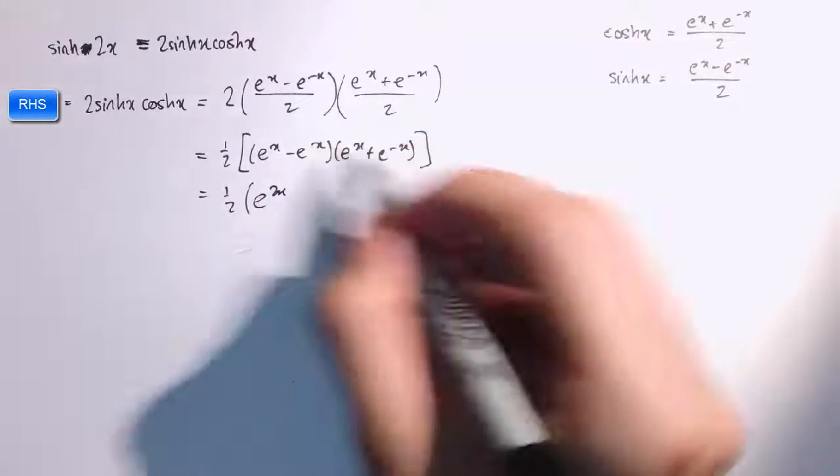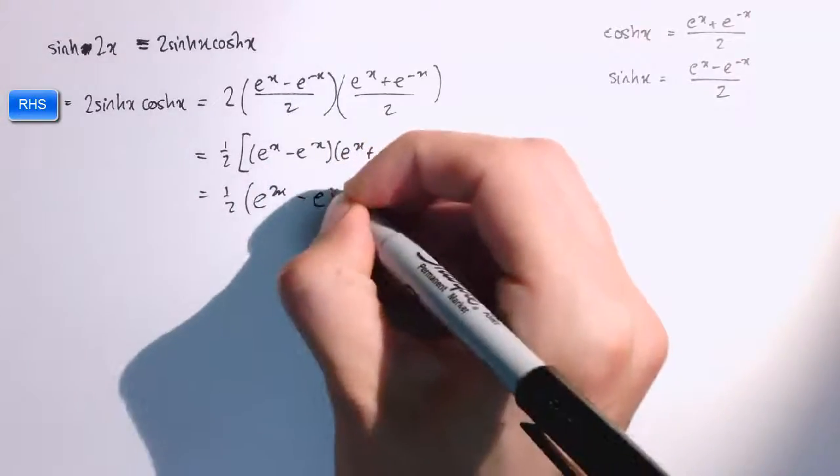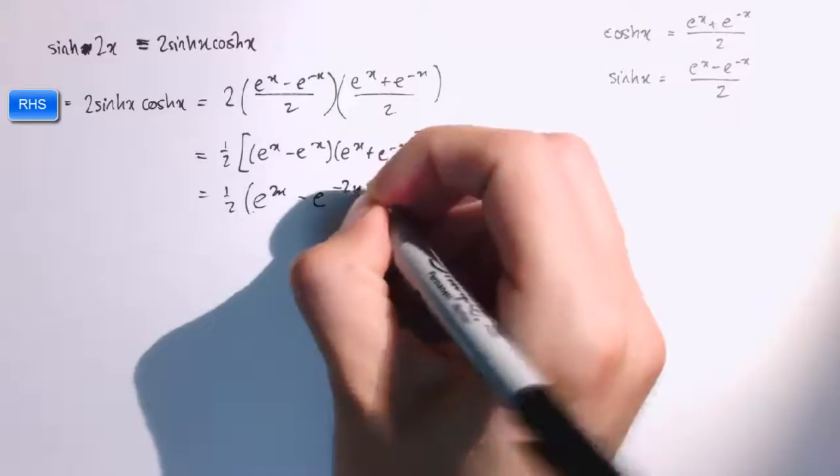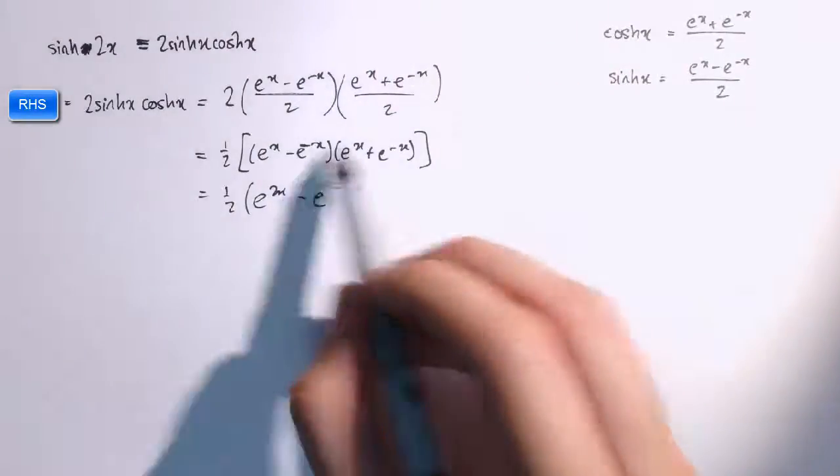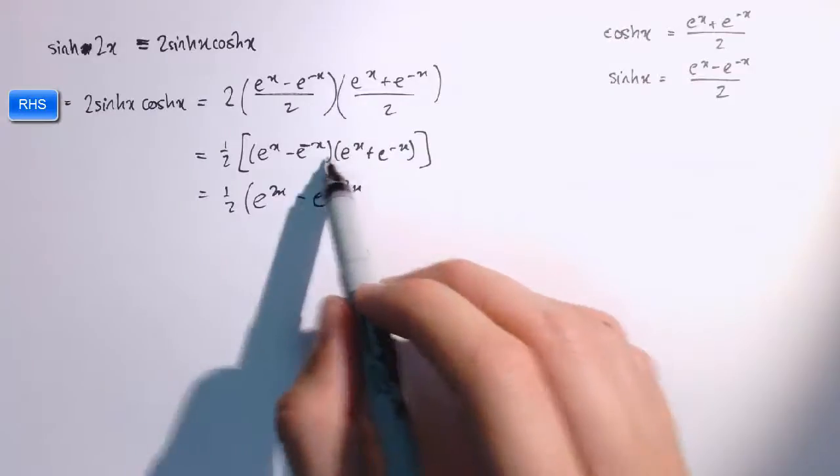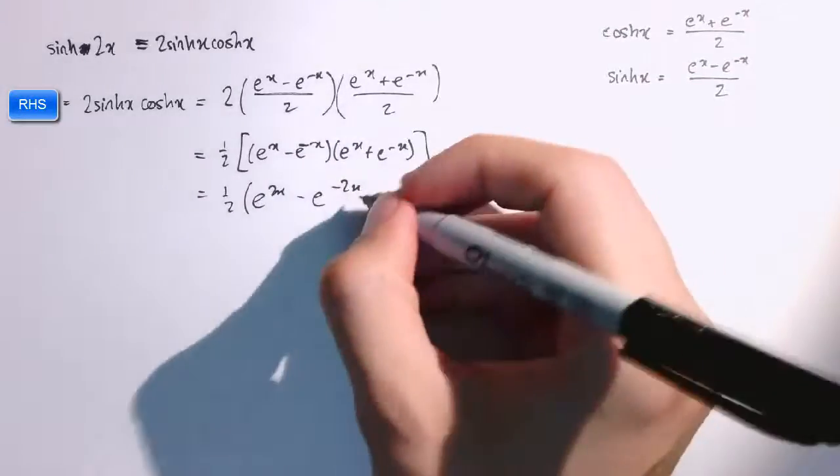E to the 2x, e to the minus x times e to the minus x and I've got a minus there, so that's minus e to the minus 2x. So, there's a minus in there, if you can't see it. And then I've got minus e to the x times e to the x, e to the minus 1, but then I've also got plus e to the x times e to the minus x, so they cancel out.